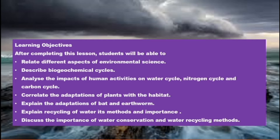Through these lessons we are going to analyze these things and correlate the adaptations of plants with their habitat. Adaptation is very important because living organisms are able to adapt themselves with the environment — that is why plants and animals are able to live. We will also explain the adaptation of pat and earthworm, and how they adapt themselves to the environment.